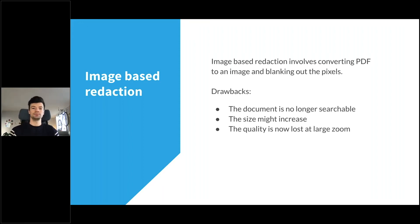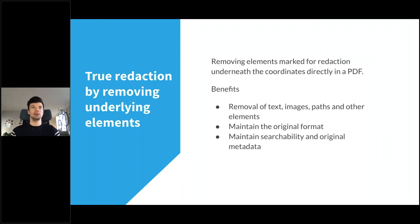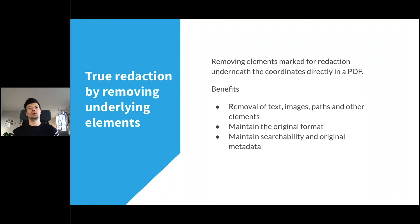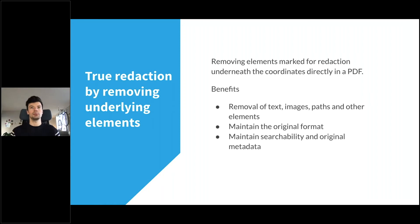However, image-based redaction is a bit more secure. The best approach follows the PDF specification: using redaction annotations to mark areas that need to be redacted. We get the bounding box of the redaction annotation and, using the quad information or coordinates, find any elements that are underneath or intersect with that bounding box. We can then remove text, images, paths, and other elements underneath — even non-visible content — while maintaining the original format, searchability, and metadata.